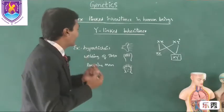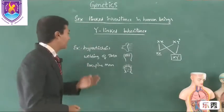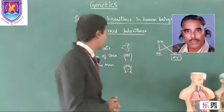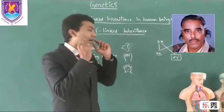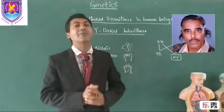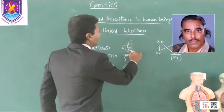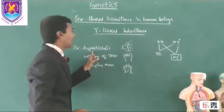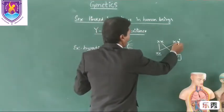There are some disorders caused by Y-linked inheritance genes. One of them is hypertrichosis. Hypertrichosis is characterized by extra hair growth on patients, especially on the ear. The ear pinna has extra growth of hair. This condition is called hypertrichosis, and this gene is mostly present on the Y chromosome.